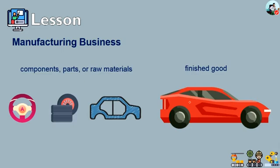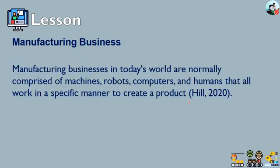These finished goods can be sold directly to consumers or to other manufacturing businesses for making a different product. According to HIL 2020, manufacturing businesses in today's world are normally comprised of machines, robots, computers, and humans that all work in a specific manner to create a product, utilizing high technology in producing finished products.